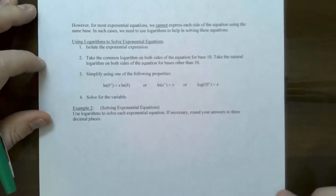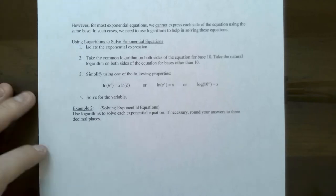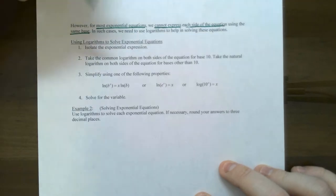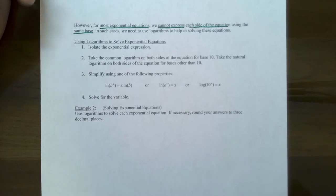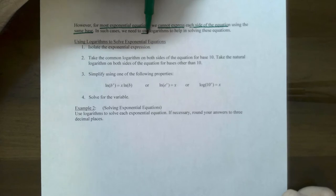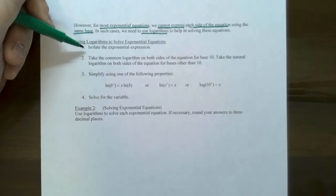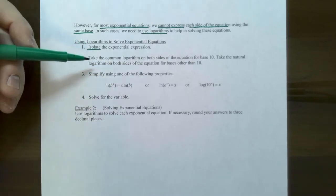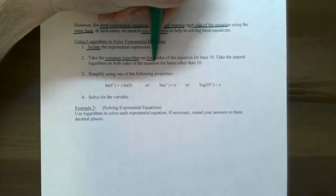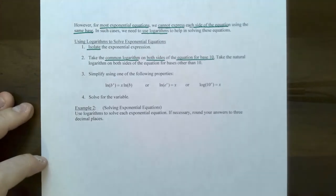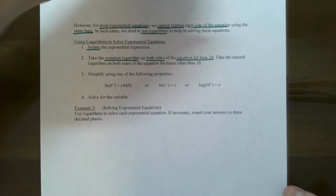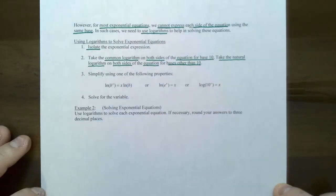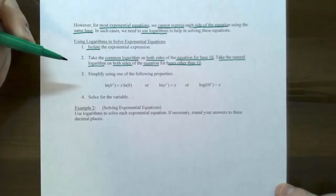Unfortunately, not all exponential equations can be solved by expressing both sides to the same base — in fact, most cannot. In that case, if the bases cannot be expressed the same, we have to use logarithms. To use this method: first isolate the exponential expression. Second, take the common logarithm on both sides if the base is 10, or the natural logarithm for any other base. Once you have the logarithm on both sides, you can use a log property to proceed.